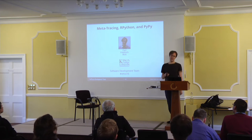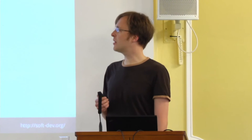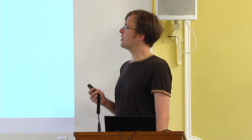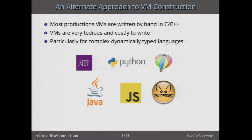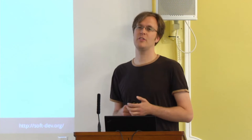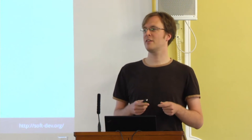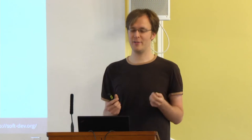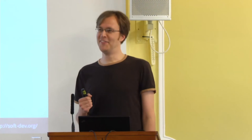I'm going to talk about meta-tracing, RPython and PyPy, which are basically the things that I've been working on for 10 or 11 years now. The motivation for this work is that, as you've seen this week, most production VMs are written painstakingly by hand in C or C++, and they're very tedious and very costly to write. The JVM has thousands of person-years of effort gone into it — it's a huge pile of very daunting and terrifying C++ code.